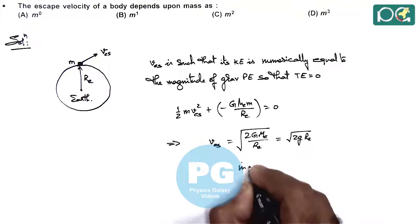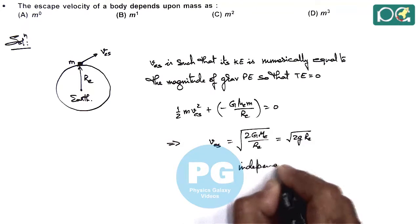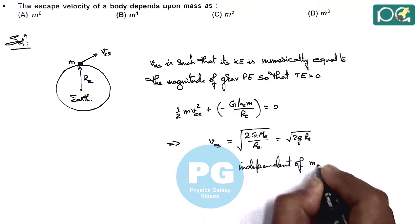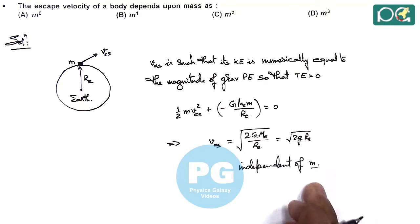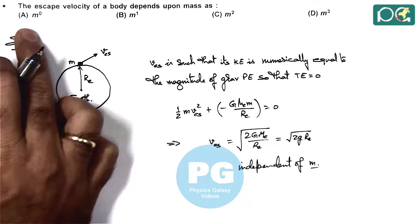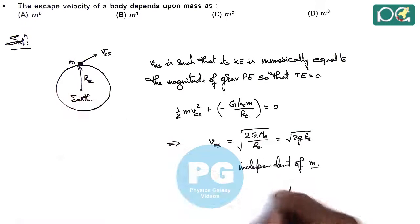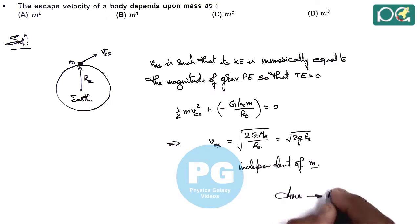Here we can see it is independent of m, the mass of the body. So we can see the dependency will be m^0. Therefore, the answer is option A.